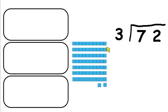OK, I've got 72, so 1, 2, 3, 4, 5, 6, 7 tens and 2 units, and I'm dividing that into 3 groups. So I've got my 3 boxes here.